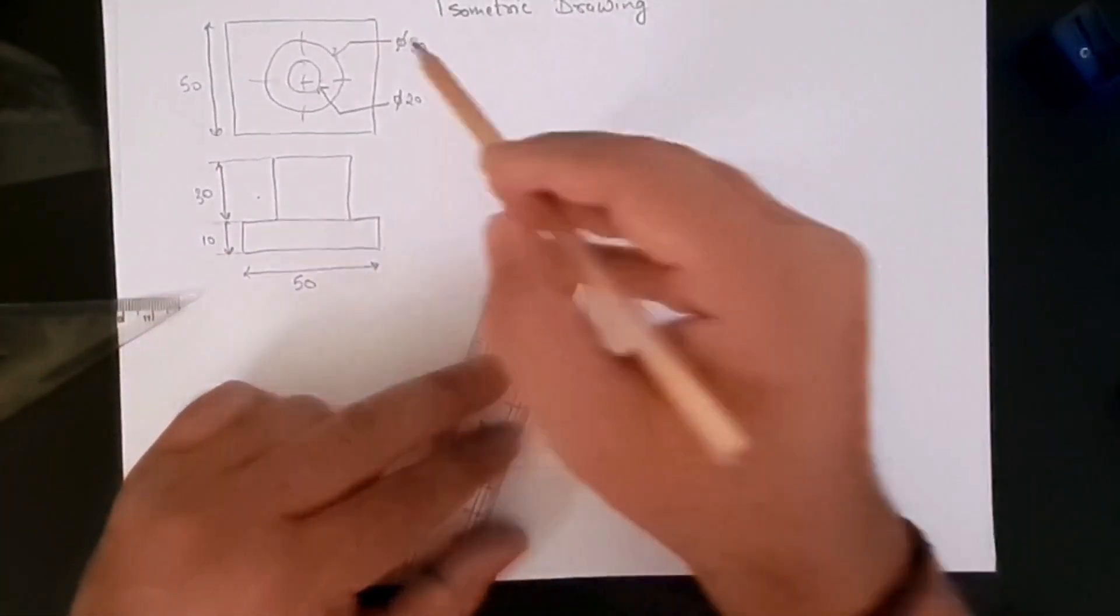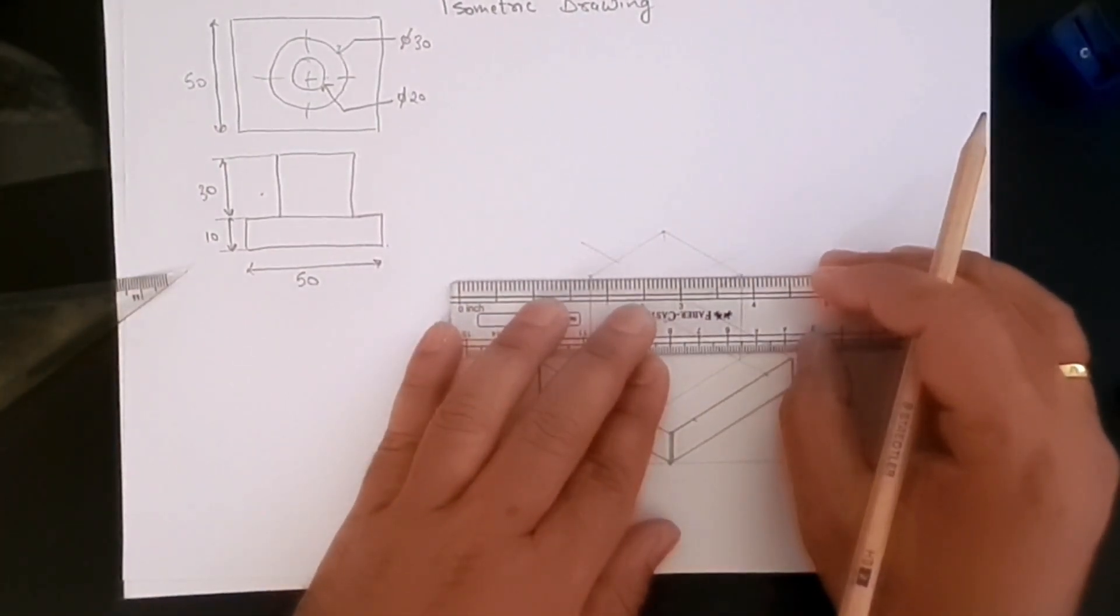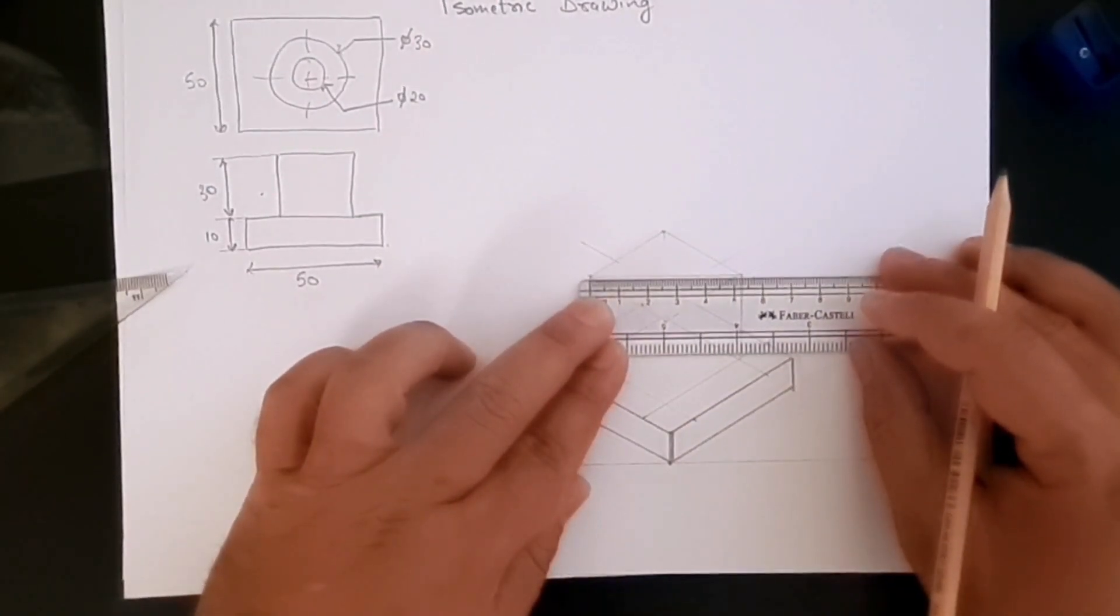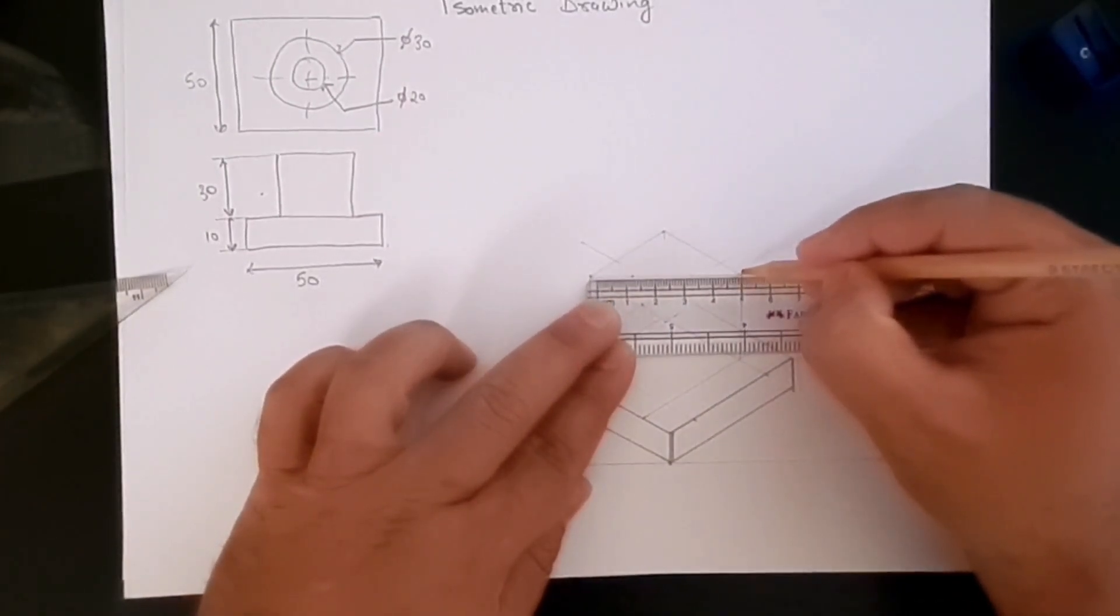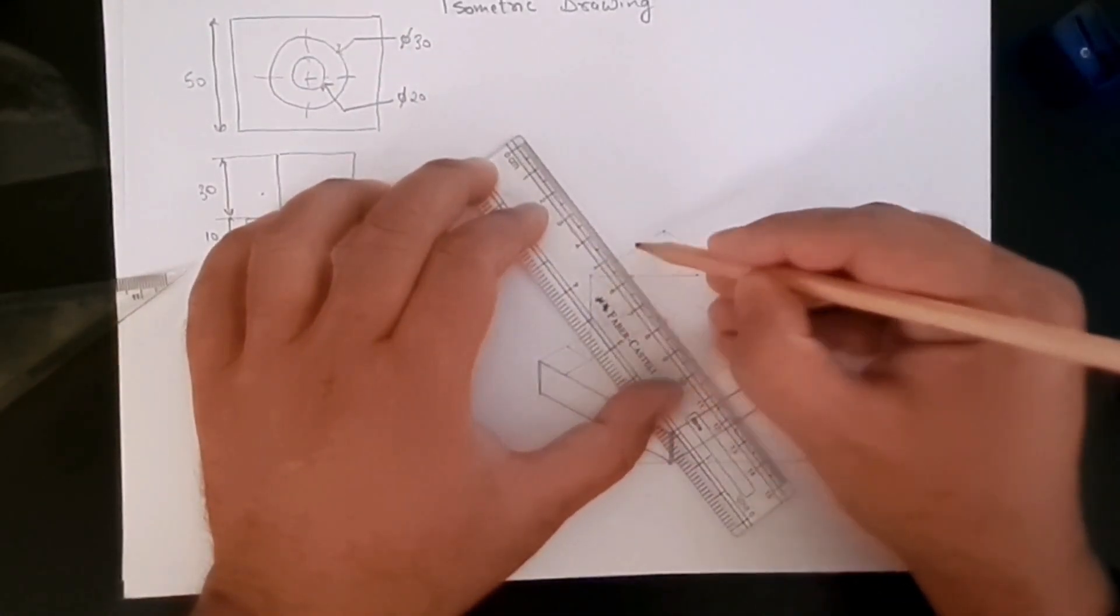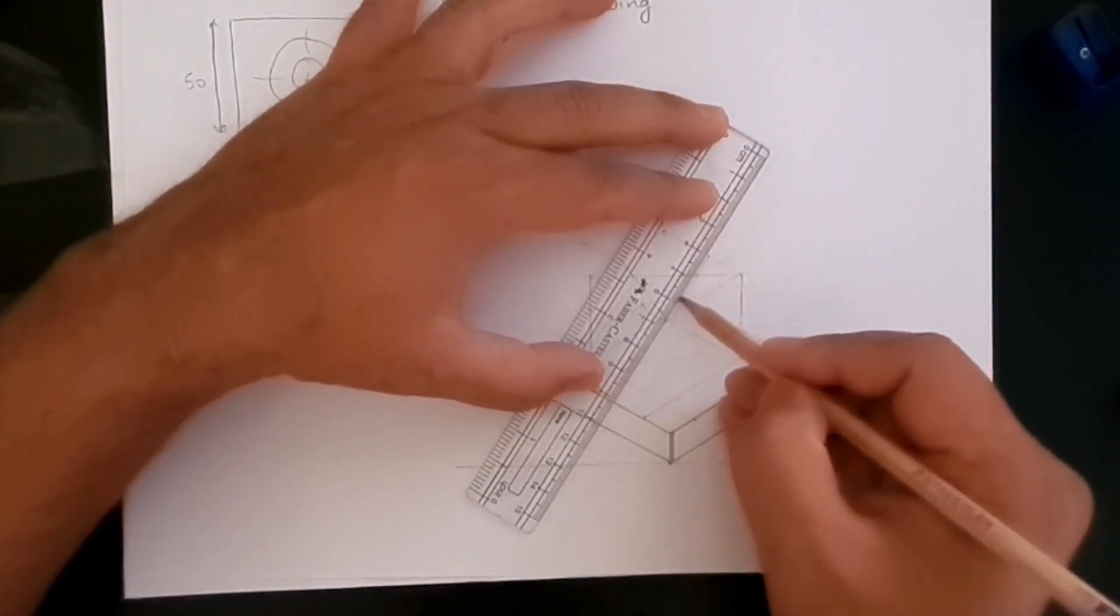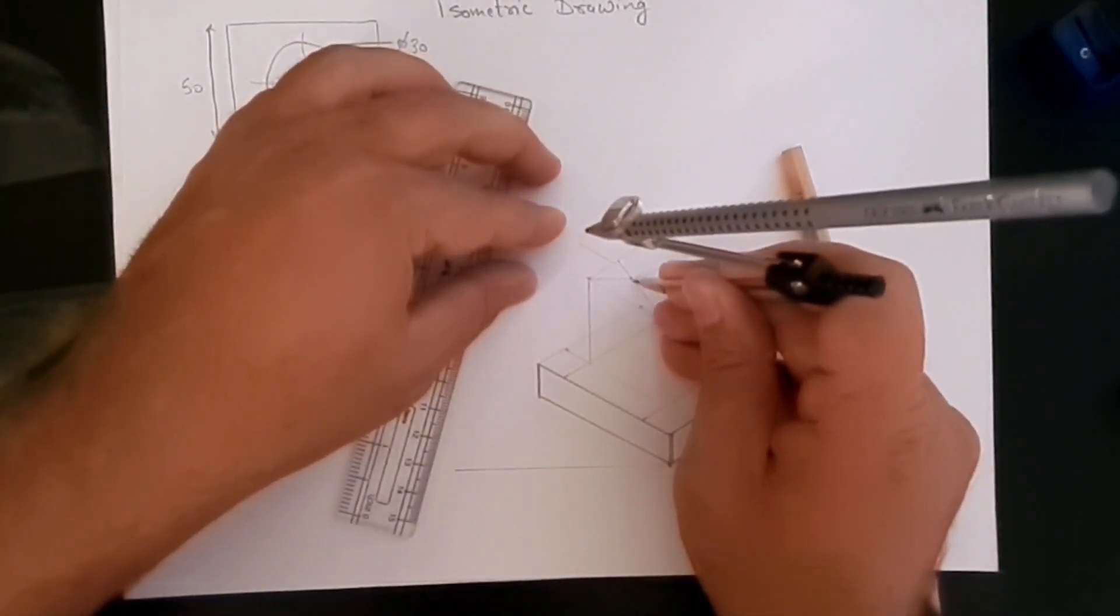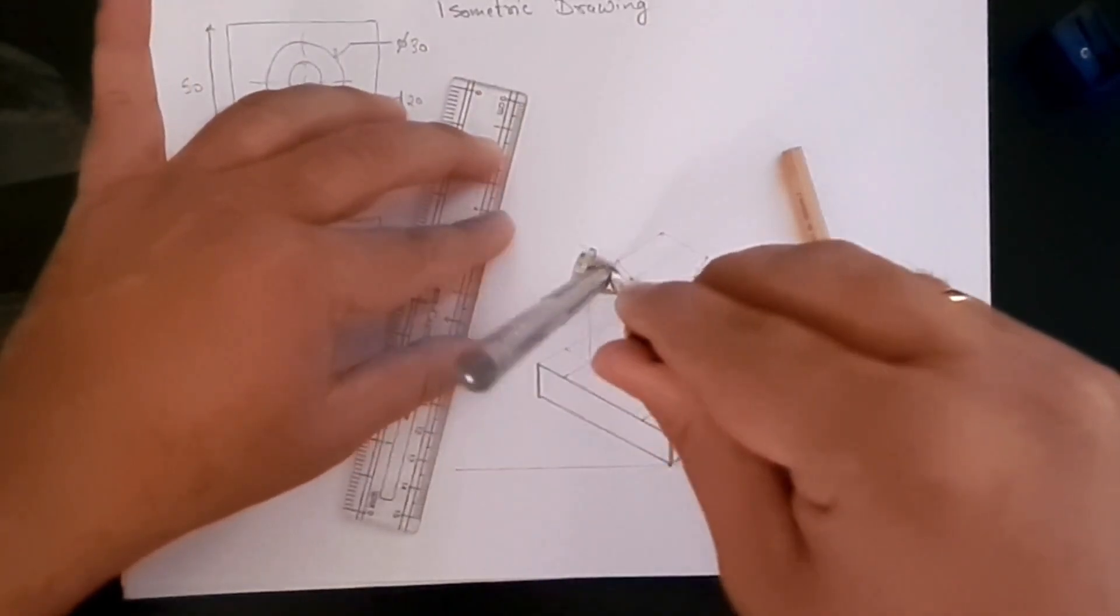We know that the diameter is 30, so the radius would be 15. So let's first create this line and then 15 centimeters on either side. That's 15 here, that's 15 here. And then from this point, we'll create these two lines, and then we'll create those circles or arcs.